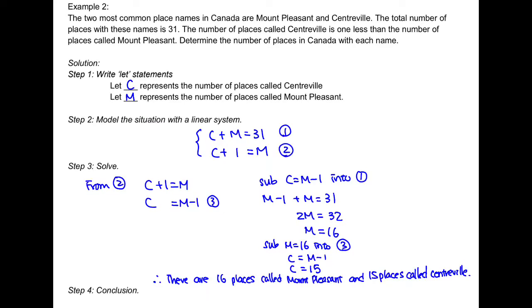Finally, let's make a conclusion: there are 16 places called Mount Pleasant and 15 places called Centerville.